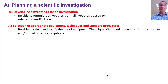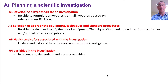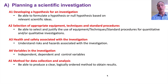Section two is that you select appropriate equipment, techniques and standard procedures. We've done all that before and we look at more techniques within the topics. The third part is knowing that you can write about health and safety with investigations. The fourth point for planning is to be able to think about the variables of the investigation and identify the independent, the dependent and the control variables and how you control them.